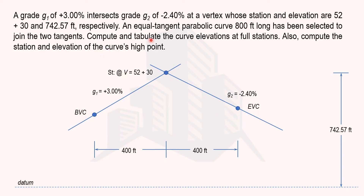We are asked to compute and tabulate the curve elevation at full stations. We don't yet know the stations at BVC and EVC, but we can calculate them from the vertex station. We are also asked to compute the station and elevation of the curve's high point, since this is a crest curve. First we find the horizontal distance, then calculate the elevation.